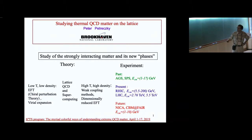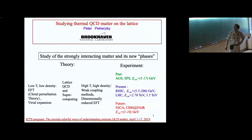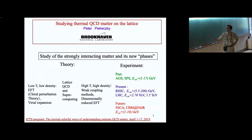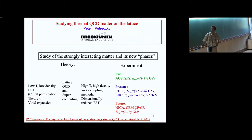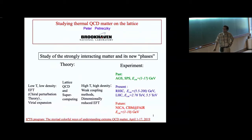Starting in this millennium, RHIC started and now collides gold ions over a wide range of energies from the lowest being 1.5 GeV to 200 GeV. LHC experiments go to 2.76 and 5.5 TeV. New facilities are planned to do heavy ion experiments, in particular the compressed baryon matter experiment at FAIR in GSI, and also NICA in Russia, concentrated in the low energy end from 1 to 10 GeV.